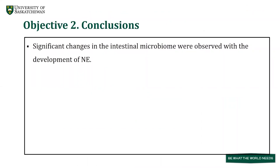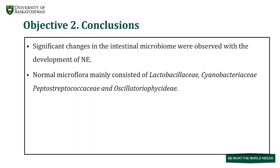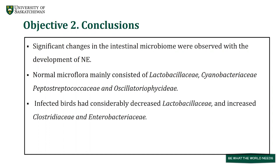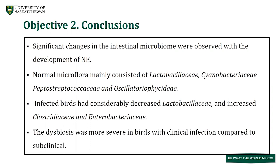From objective two, we concluded that significant changes in the intestinal microbiome were observed with the development of necrotic enteritis. Normal microflora mainly consisted of Lactobacillaceae, Cyanobacteriaceae, Peptostreptococcaceae, and Oscillospiraceae. C. perfringens infected birds had considerably decreased Lactobacillaceae and increased Clostridiaceae and Enterobacteriaceae. The dysbiosis was more severe in birds with clinical infection compared to subclinical.